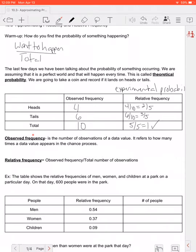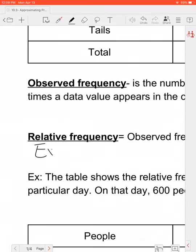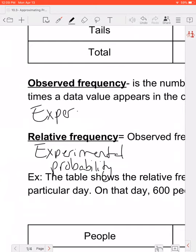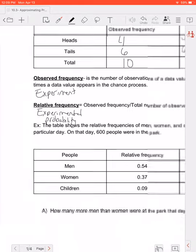So again just some definitions. Our observed frequency is the number of observations of a data value. So how many times did we land on heads? How many times did we land on tails? It refers to how many times a data value appears. So that's a very math term, but it's just how often did something happen. And the relative frequency is the observed frequency over the total number of observations. And again this may be something good right here. This is what we call experimental probability. And the observed frequency is when we do an actual experiment and see what happens.